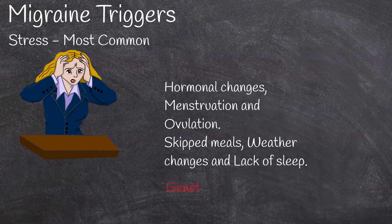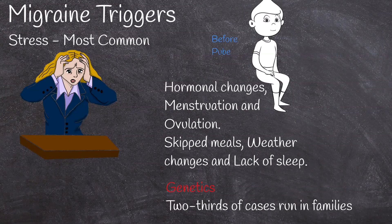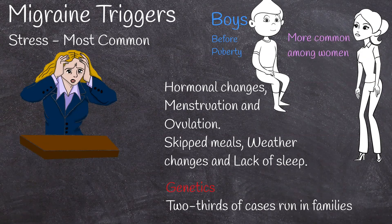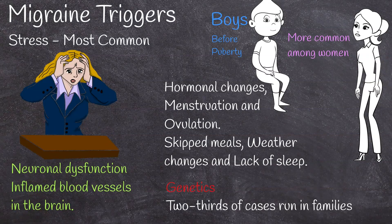Migraine has some genetic basis, as two-thirds of cases run in families. It may also have a connection with sex hormones, because before puberty it is more common among boys, but in adulthood it is more common among women. Furthermore, migraine is more prominent before menopause and symptoms lessen after menopause. The exact cause is not fully clear, but it is believed that a primary neuronal dysfunction leads to a sequence of intracranial and extracranial changes. One theory suggests it involves inflamed blood vessels in the brain, and the way the brain processes pain signals may play a role too.